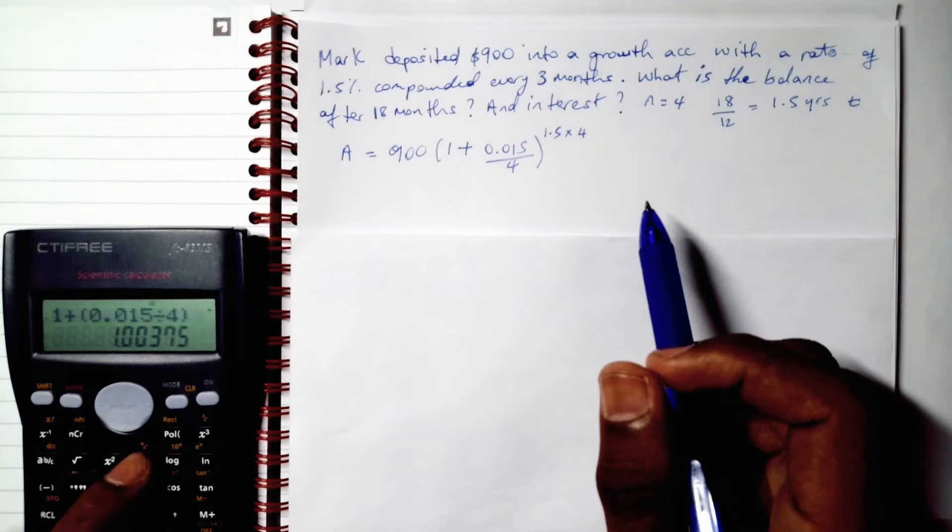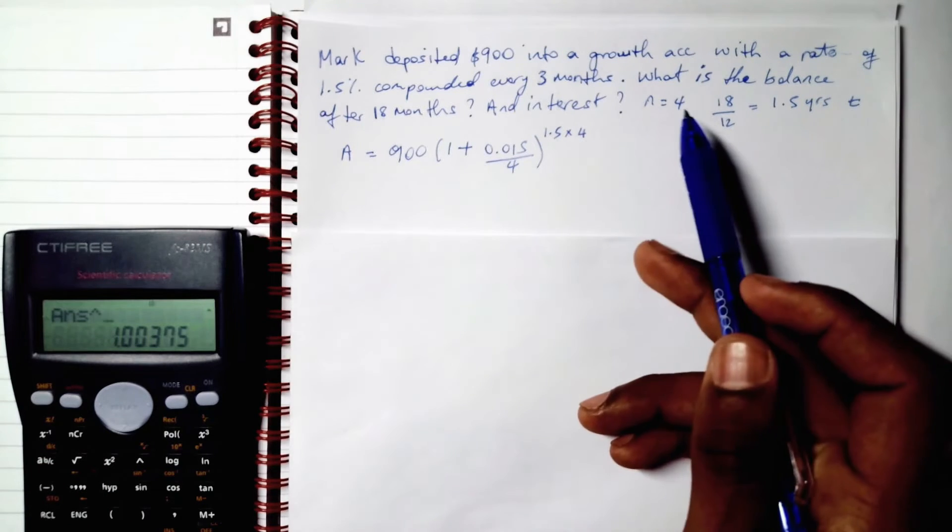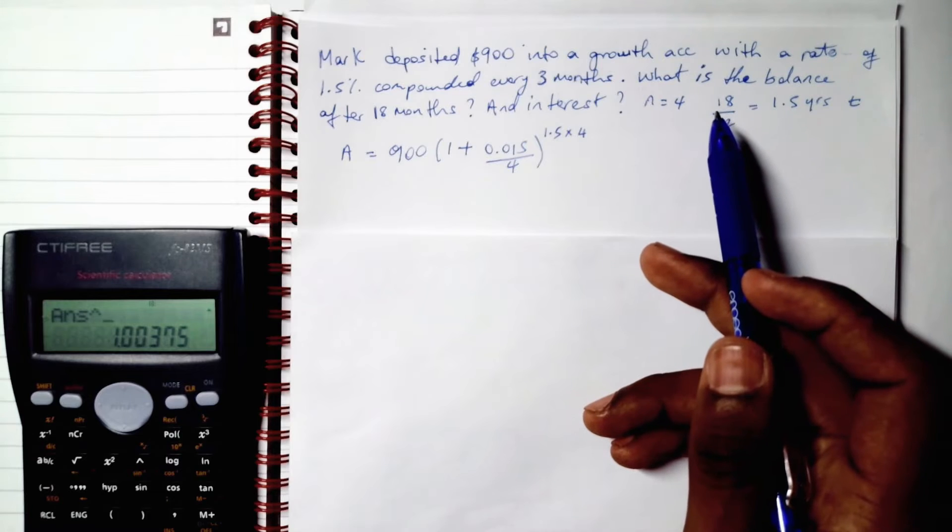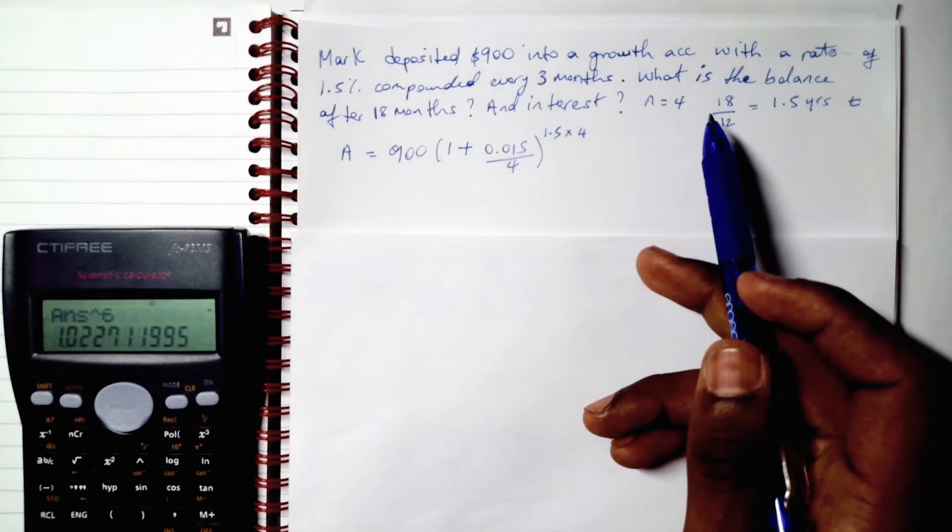We proceed to raising it by 1.5 times 4 is 6. So raise it to the power of 6 equals that. Times 900.